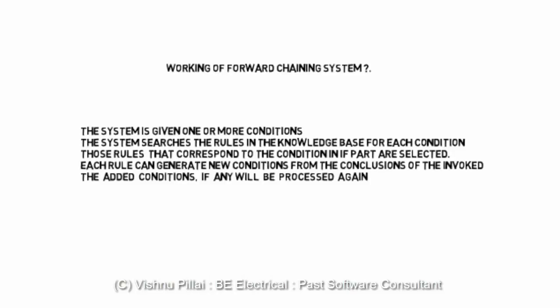The forward chaining system is given one or more conditions. The system searches the rules in the knowledge base for each condition. Those rules that correspond to the condition's 'if' part are selected, and each rule can generate new conditions from its conclusion. Any added conditions will be processed again. This is a simple way how a forward chaining system works.